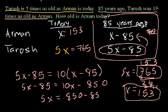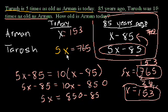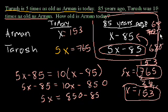Welcome to the third in the series of algebra age word problems. I just wanted to start off where I left off in the second one. It turns out we did get the right answer. If Arman is 153 and Tharouche is 765, then 85 years ago Arman would have been 68 and Tharouche would have been 680 — that's 10 times. So it worked out.